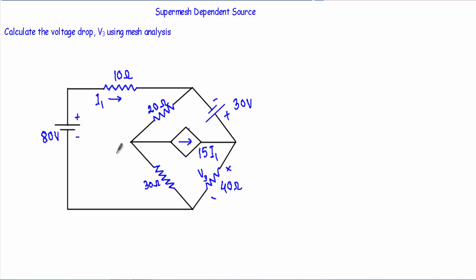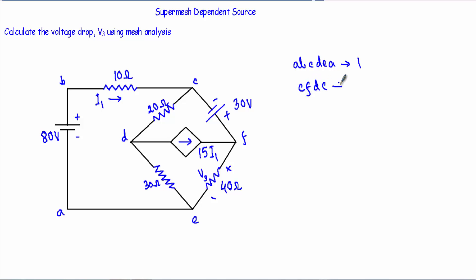In the first step we have to identify the total number of meshes. The circuit will have only three meshes. Let's say this is our A, B, C, D, E terminal — therefore A-B-C-D-E-A will represent mesh one. Then C-F-D-C will be our mesh number two. After that, D-F-E-D will be our mesh number three.